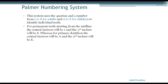For permanent teeth, starting from the midline, the central incisor will be 1 and the third molar will be 8. So you're starting from the middle and working your way back to the very last tooth in your mouth, which is the third molar — also known as your wisdom tooth. The central incisor will be number 1 and the third molar will be number 8. For baby teeth — our primary dentition — the central incisor will be A and the second molar will be E.